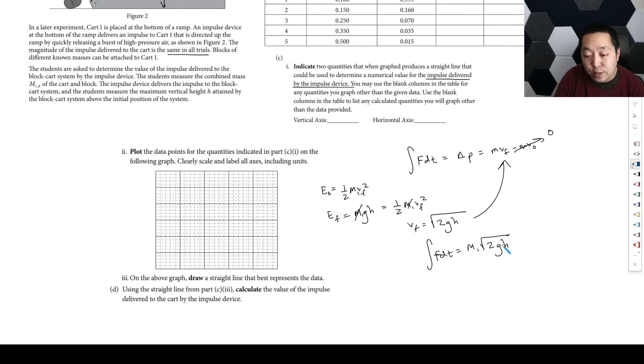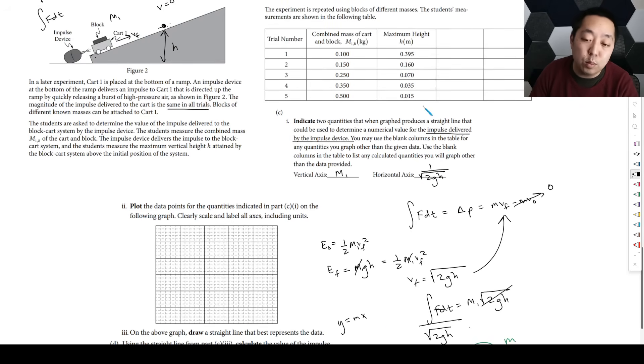What's varying is M1 is varying and H is varying, so those need to be on separate sides. One's got to be horizontal, one's got to be vertical. The simplest thing is probably to divide the square root of 2GH over so we have M1 equals 1 over square root of 2GH times the impulse. Then we can plot this as our Y variable, plot this as our X variable, and the impulse is our slope. We're going to plot M1 on the vertical axis and 1 over the square root of 2GH on the horizontal axis. G you can use 9.8 for that.